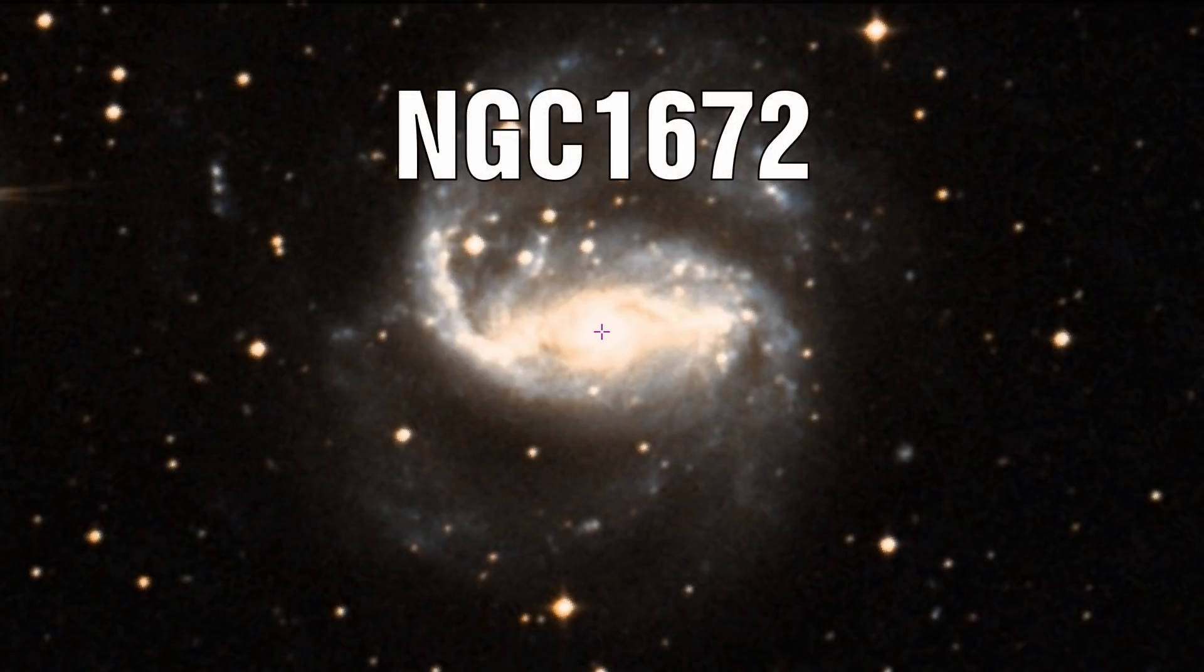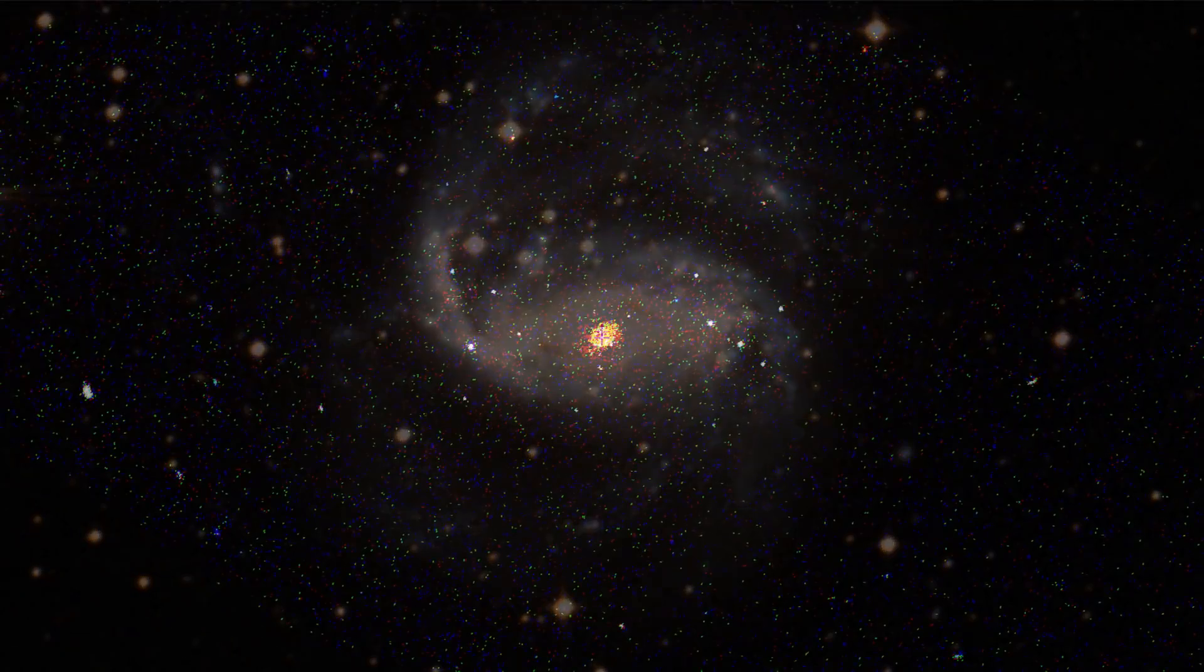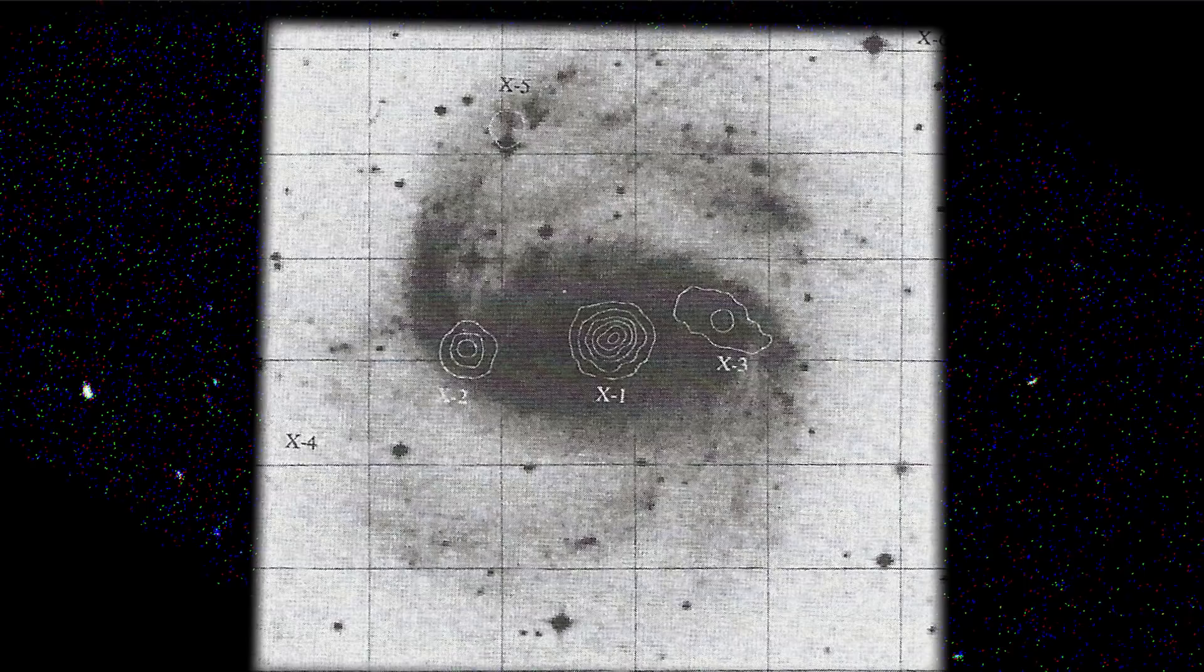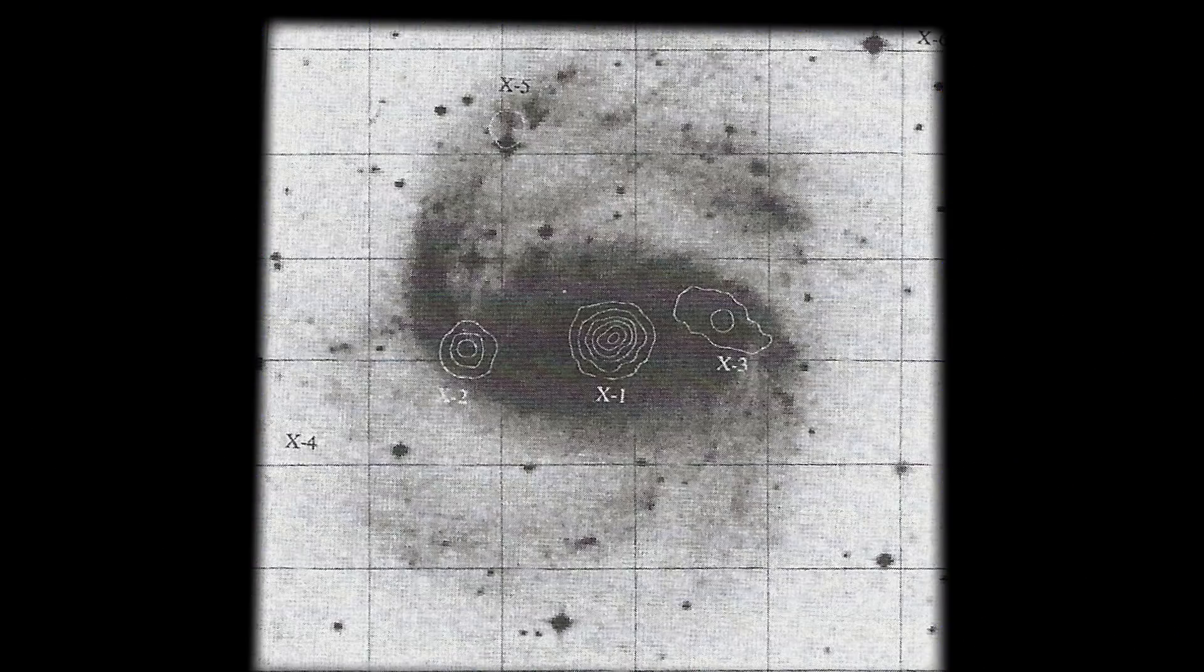In NGC 1672 we see a Seyfert galaxy which has two strong X-ray sources located at points equidistant from the nucleus. Could it be that those ejected along the planar rotation would evolve within the host galaxy and therefore appear as if they are galaxy mergers when in fact they are the opposite?